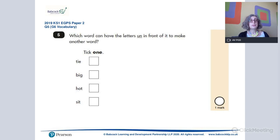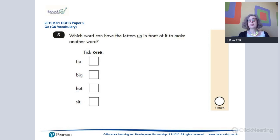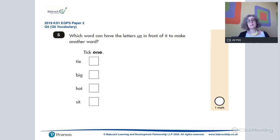Here's another example from Key Stage 1 — a very similar issue with prefixes. The question asks which word can have the letters 'un' in front of it. When we teach things like prefixes, we have to go beyond just teaching what they mean — we need to give children multiple exposures to lots of different words, and examples and non-examples of words that can have that prefix attached. Analysing those papers is a really useful way of getting under the skin of how children, by the end of the key stage, are demonstrating their vocabulary skills.